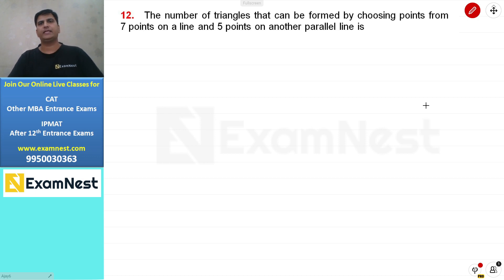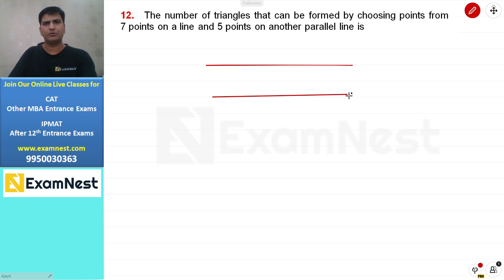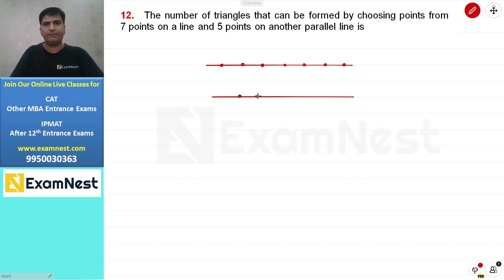Next question: the number of triangles that can be formed by choosing points from 7 points on a line and 5 points on another parallel line. We have 2 parallel lines. This is a standard permutation and combination question — an easy one. Here we have 1, 2, 3, 4, 5, 6, and 7 points on one line, and 5 points on the other.